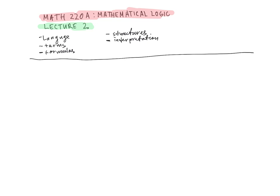Today we will continue discussing formulas, introducing some further notation and some of their properties, and then we will begin talking about interpretations of formulas in structures, expanding on the discussion of the semantics so far. We will begin with the following proposition, which is an analog of unique readability for terms but generalized to formulas: unique readability of formulas.